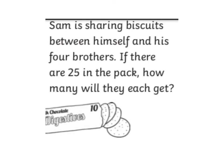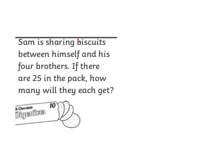What about this problem? It says, Sam is sharing biscuits between himself and his 4 brothers. If there are 25 in the pack, how many will they each get? Now, in this problem it uses the word 'sharing.' When I see that word in a word problem, I know it's going to be a division problem. There are 25 biscuits, and Sam is sharing them between his 4 brothers and himself — so there are 5 people. This problem would be 25 biscuits divided amongst 5 people equals how many?